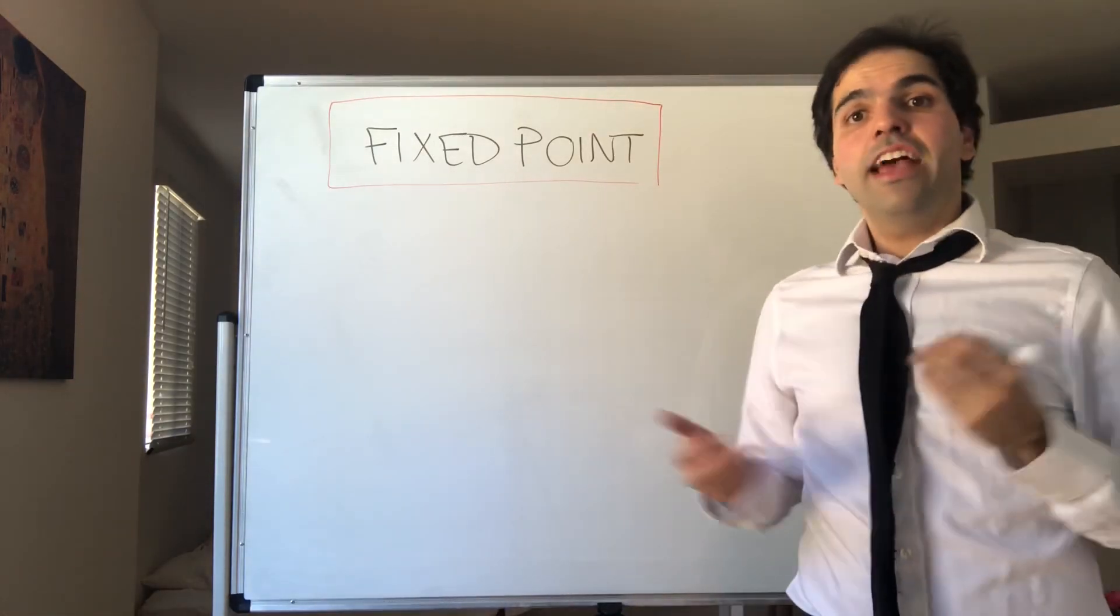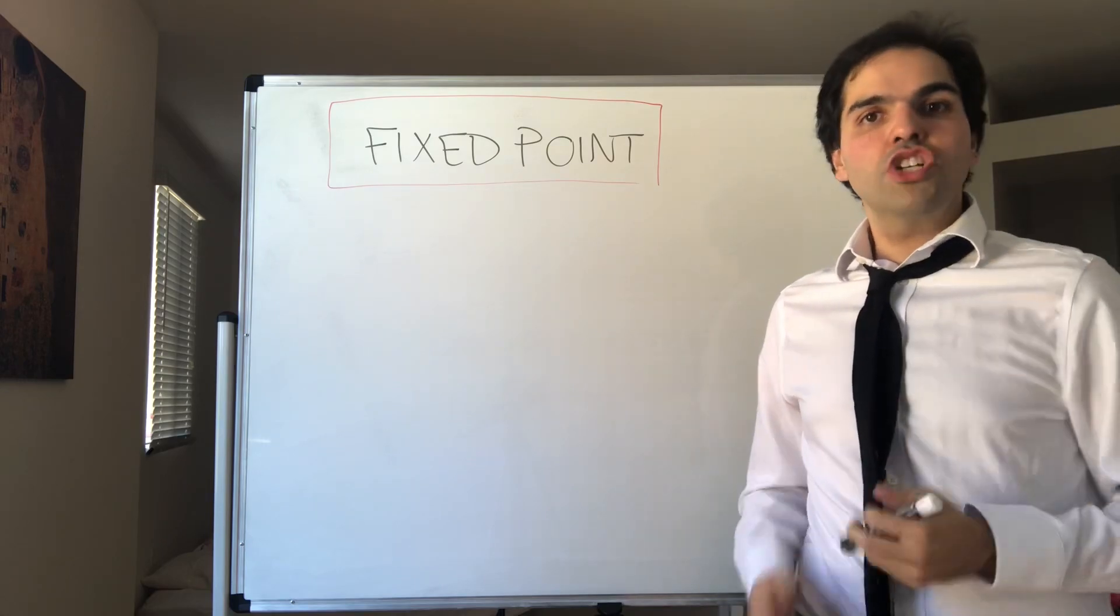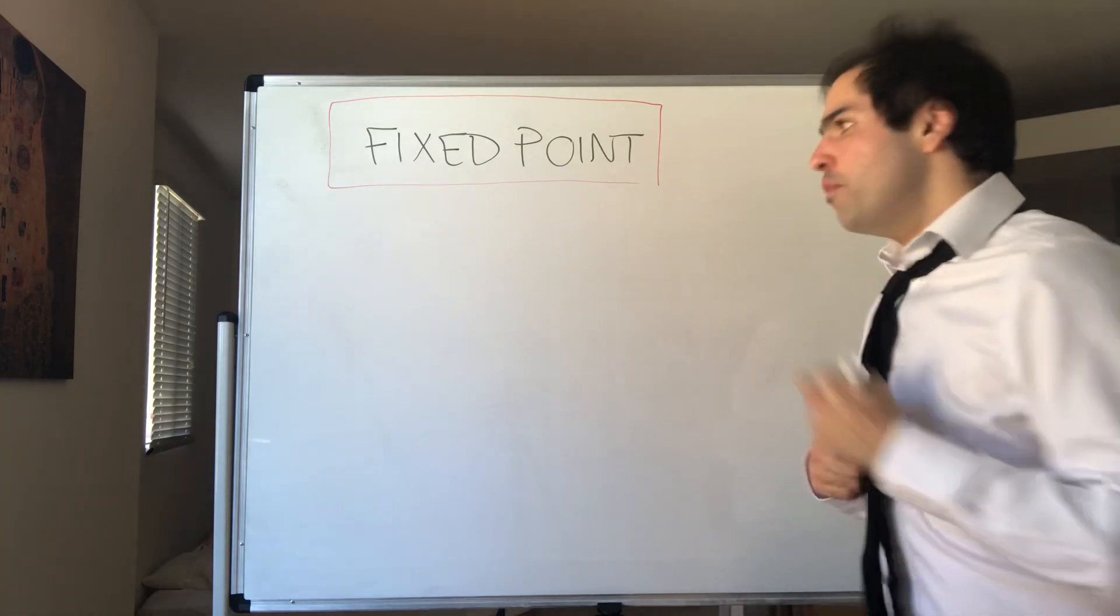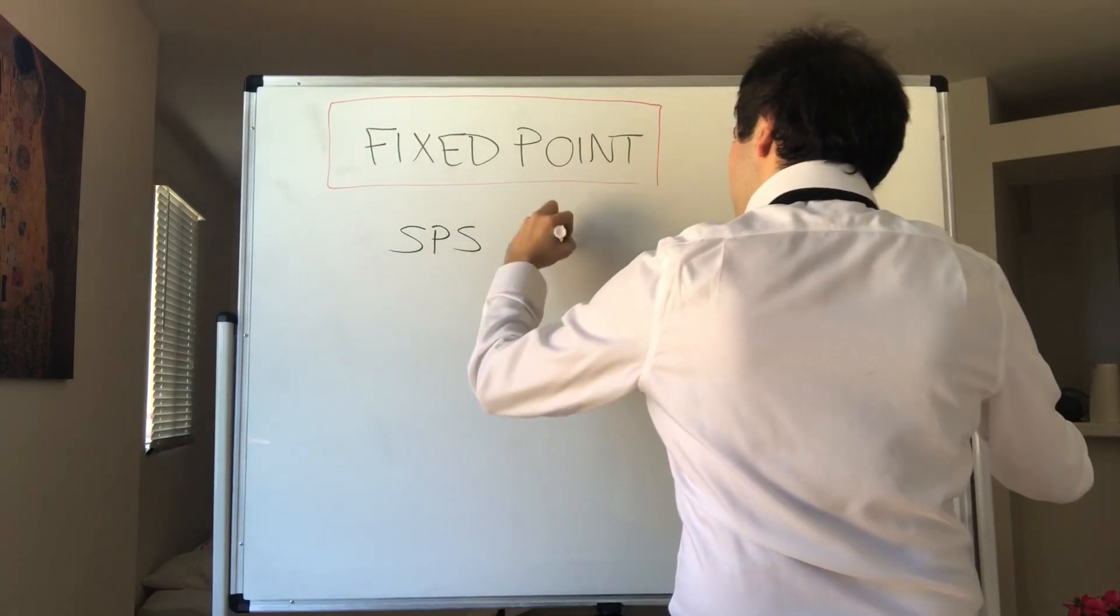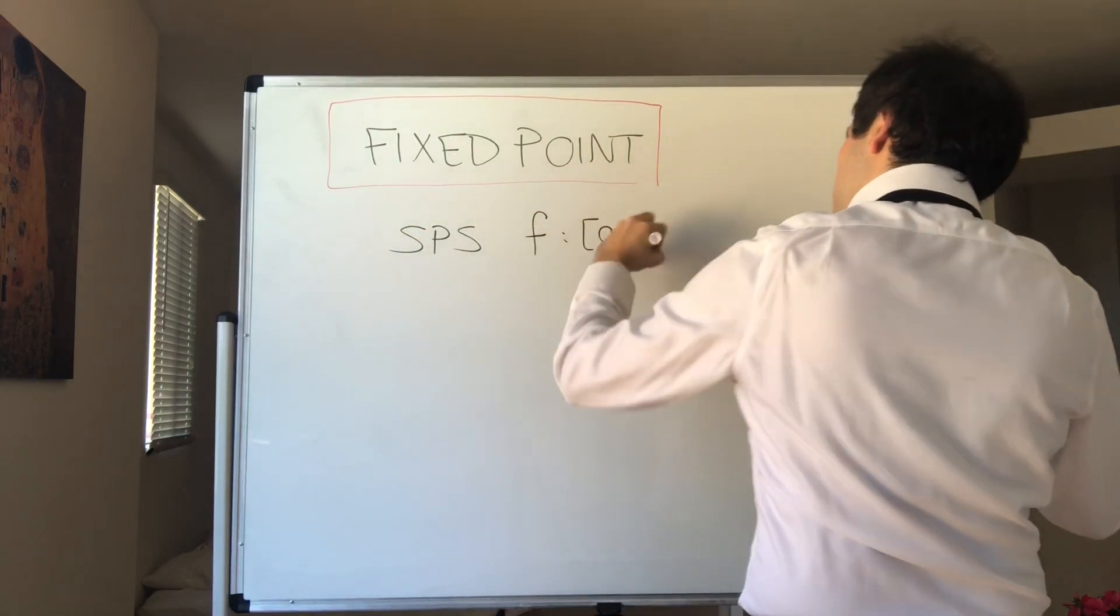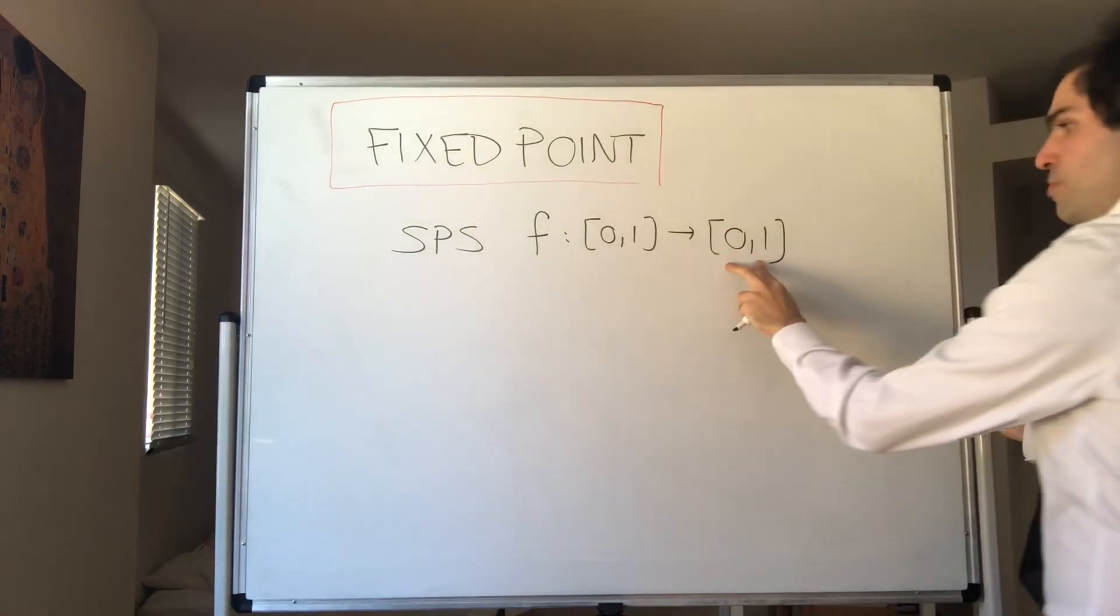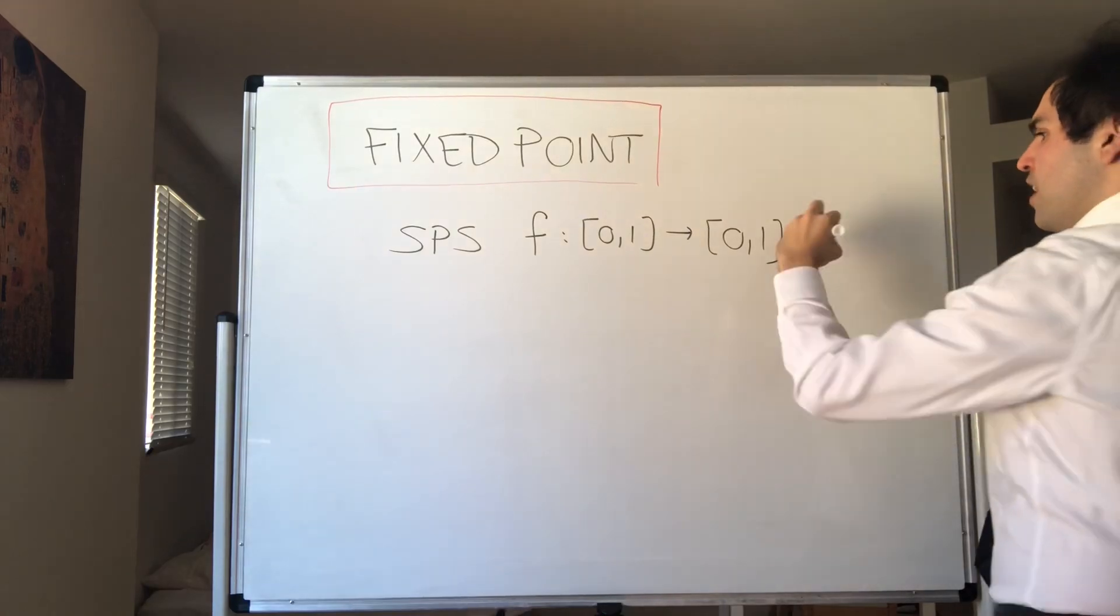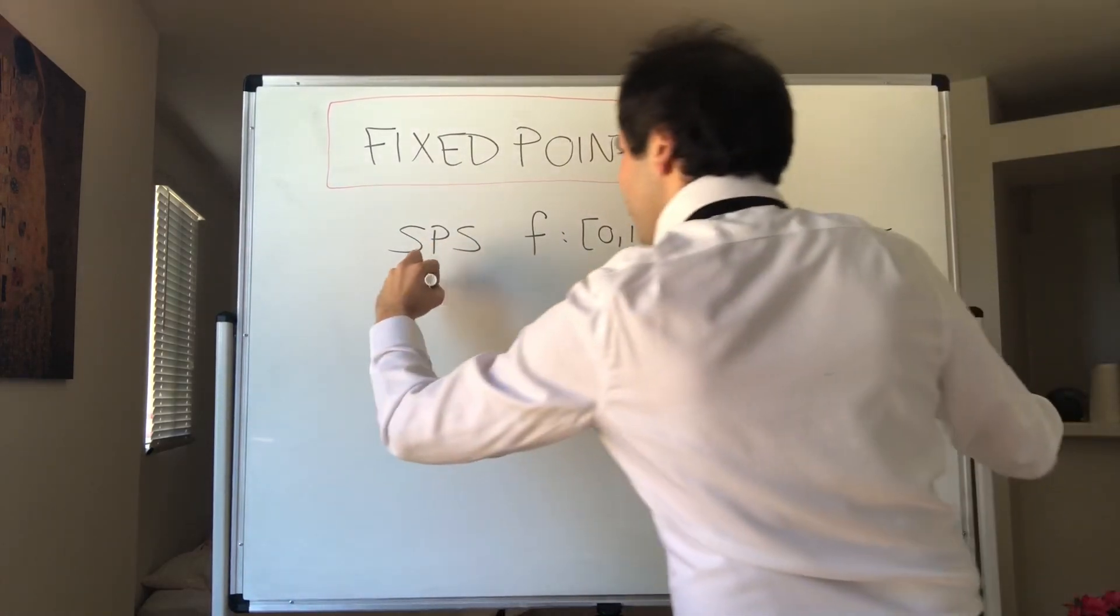All right, thanks for watching. Today I want to use the intermediate value theorem to show that a function has a fixed point. More precisely, suppose you have a function f from [0,1] to [0,1], and this is continuous, then f has a fixed point.